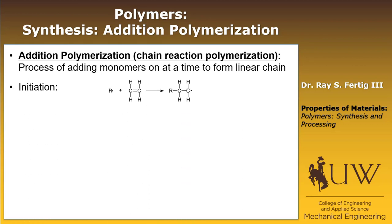Addition polymerization consists of three phases. The first phase is the initiation phase. What you see is there's our monomer, and it's going to join up with some reactive group. It's going to break the double bond and then form to the chain, leaving a reactive carbon region at the end. So now this can go bond with another monomer.